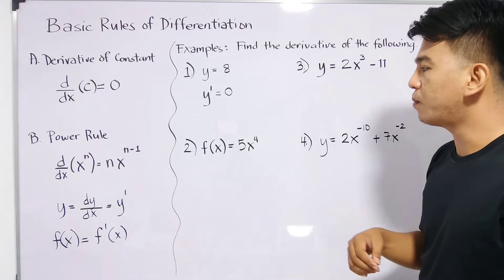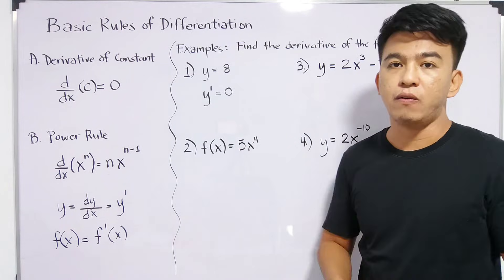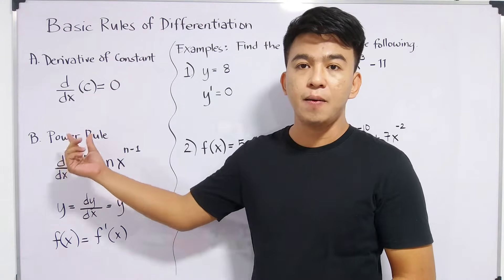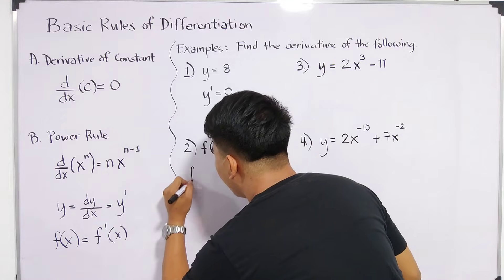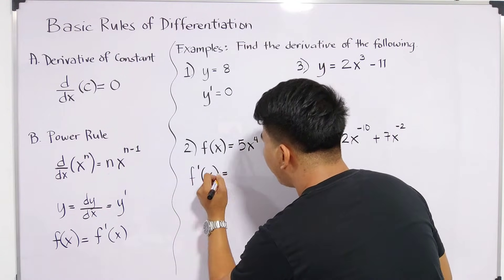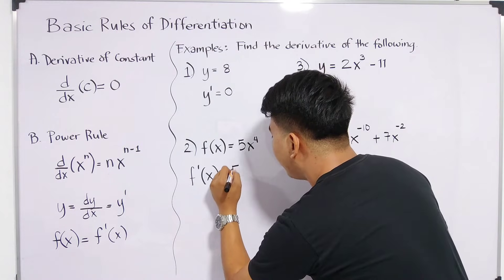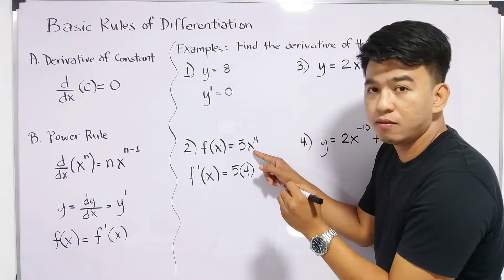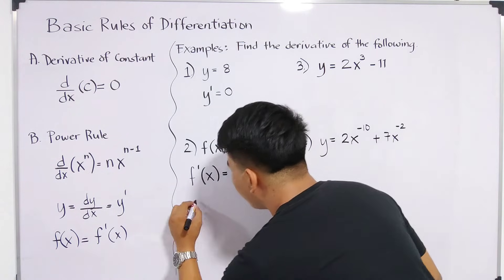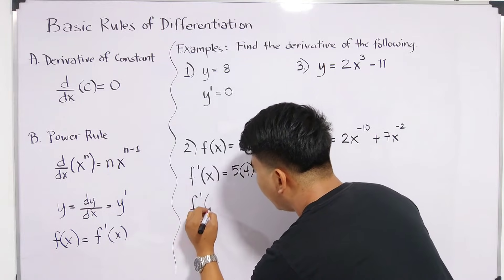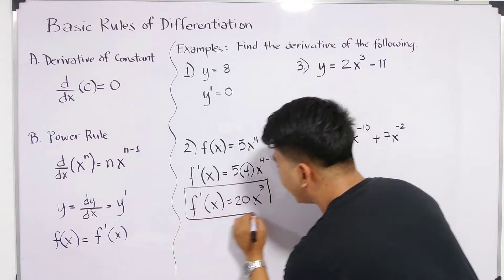Now let's move on with item number 2. We are given f of x is equal to 5x to the 4th power. To get the derivative, we need to use the power rule. Since it's f of x, we will use f prime of x notation. Multiply the exponent 4 by the coefficient 5 — it becomes 5 times 4 — then copy the variable x, copy your 4, and subtract 1 from the exponent. Simplifying, f prime of x is equal to 20x raised to the 3rd power.